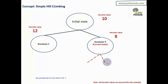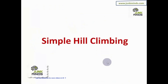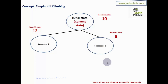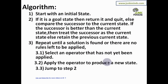In the simplest terms, simple hill climbing works as follows: start with an initial state, apply a rule to get a new state, compare the successor with the current state. If the successor is worse, retain the current state; if the successor is better, the successor becomes the current state and you continue. At any point, if you reach the goal state, you stop.